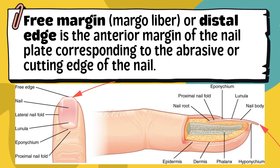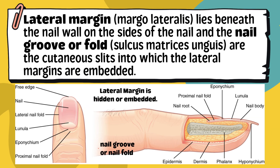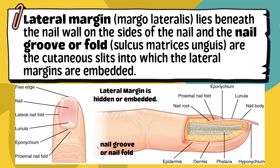Third, the free margin — also called the free edge — is the anterior margin of the nail plate corresponding to the abrasive or cutting edge of the nail. It's the part of the nail plate you can file or cut, the edge that hangs over the end of your finger. Fourth, the lateral margin lies beneath the nail wall on the sides of the nail, embedded in the nail groove or sulcus. The nail groove is the little ditch or slit in the skin where the side edge of the nail is firmly set, helping hold the nail plate in place.